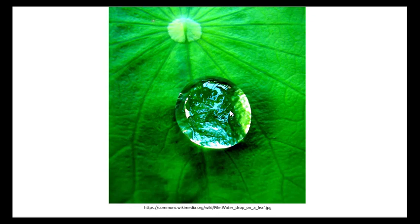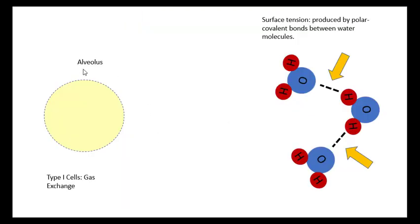So what does this have to do with the alveolus? So remember, the alveolus is the smallest functional unit in the lungs. It's where the gas exchange occurs.